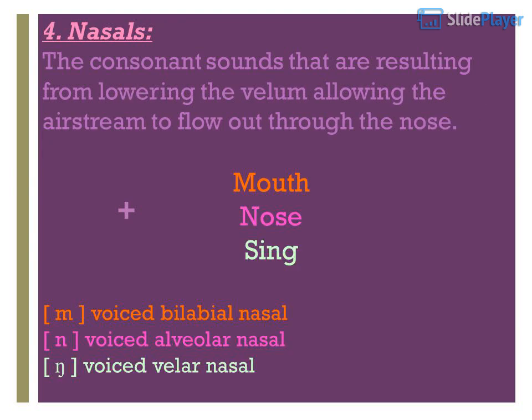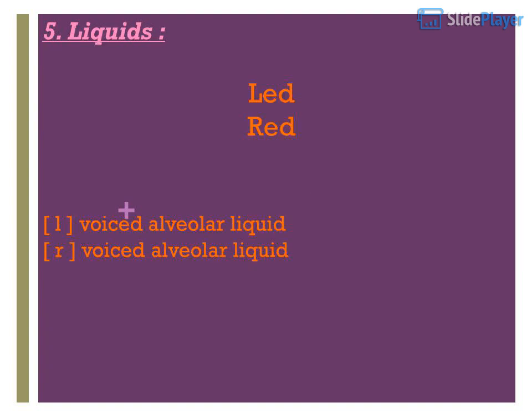Example words: mouth, nose, sing. Nasals — the consonant sounds resulting from lowering the velum, allowing the airstream to flow out through the nose. M — voiced bilabial nasal. N — voiced alveolar nasal. Voiced velar nasal.